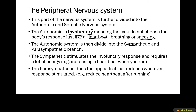Those involuntary body responses are carried out by the autonomic nervous system, which is divided into a sympathetic as well as a parasympathetic branch. The sympathetic branch is the stimulator — it stimulates an involuntary response. For example, how fast your heart beats and how fast you breathe are involuntary. The sympathetic branch of the autonomic nervous system is the one that stimulates those actions, causing breathing and heartbeat to increase.